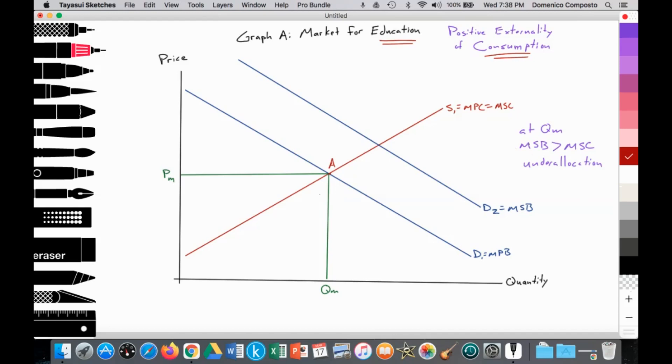So we can notice that at QM, we go up, and here we have point B. Point B being the marginal social benefit of education is greater than the marginal social cost at point A. Again, marginal social benefit at QM greater than the marginal social cost - society would like more.